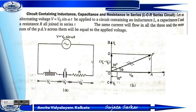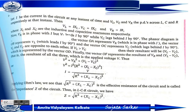Now, circuit containing inductance, capacitance, and resistance — this is the LCR series circuit. The voltage V equals V₀ sine omega t is applied across the inductance, capacitance, and resistor. The same current flows through all three elements. The vector sum of the potential differences across them equals the applied voltage. VL equals IXL, VC equals IXC, and VR equals IR. XL and XC are the inductive and capacitive reactances.